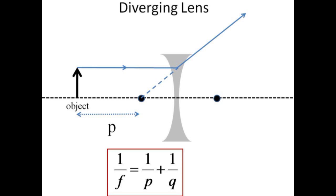The ray emerging from the tip of the object parallel to the optical axis diverges as though it came from the focal point on the left.